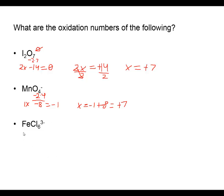If I have the following complex ion with iron and six chlorines, we treat the oxidation number for chlorine as a negative one since it's present as chloride. There are six chlorines, so negative one times six gives a total of negative six.